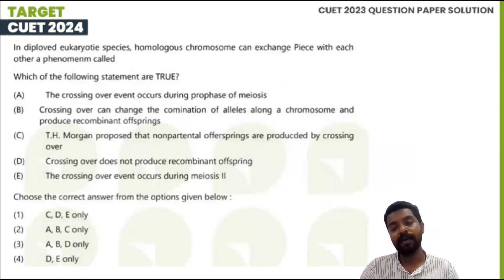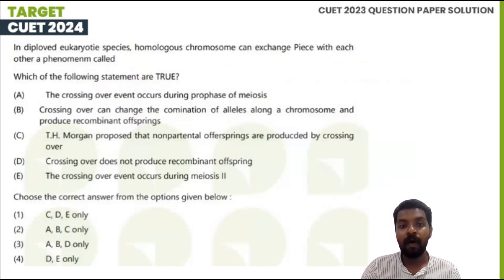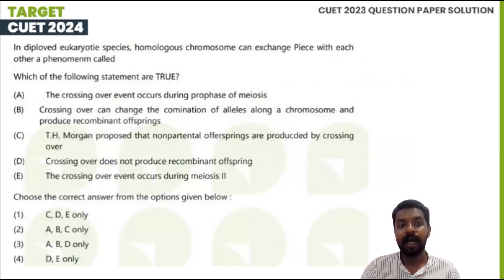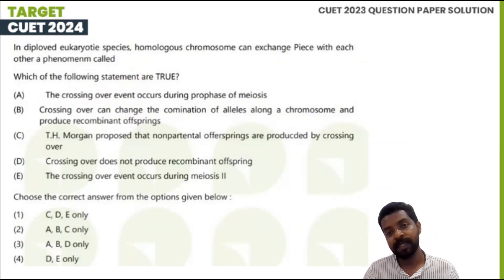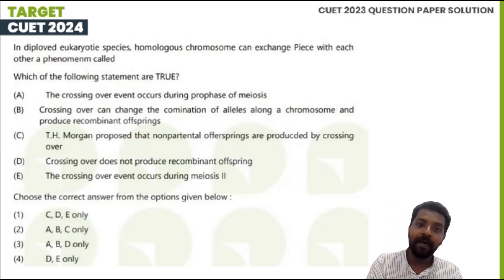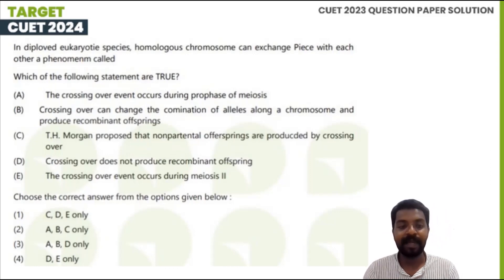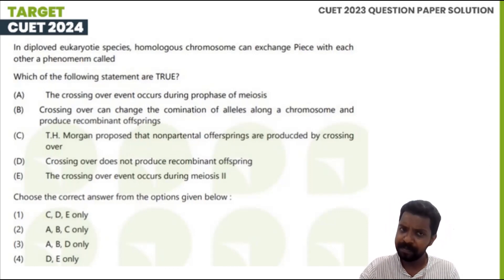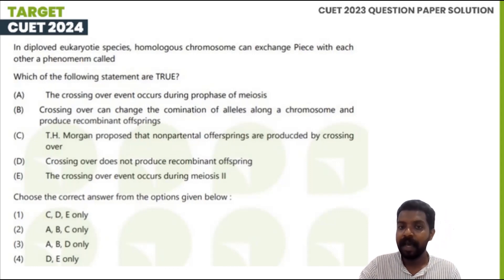In eukaryote species, homologous chromosomes can exchange pieces with each other, a phenomenon called crossing over. The crossing over event occurs during prophase of meiosis.